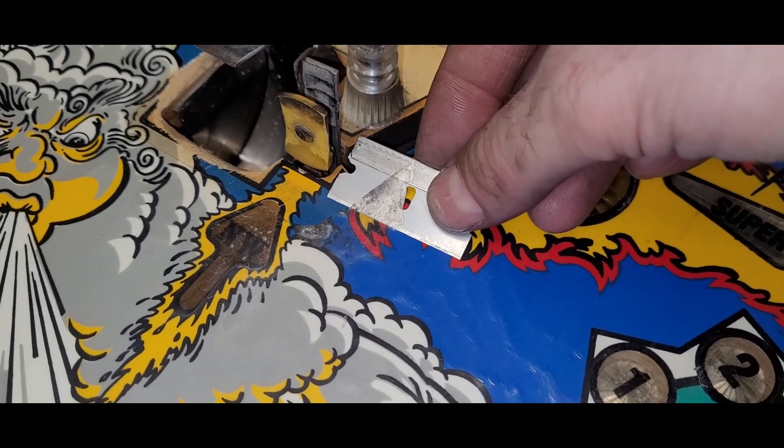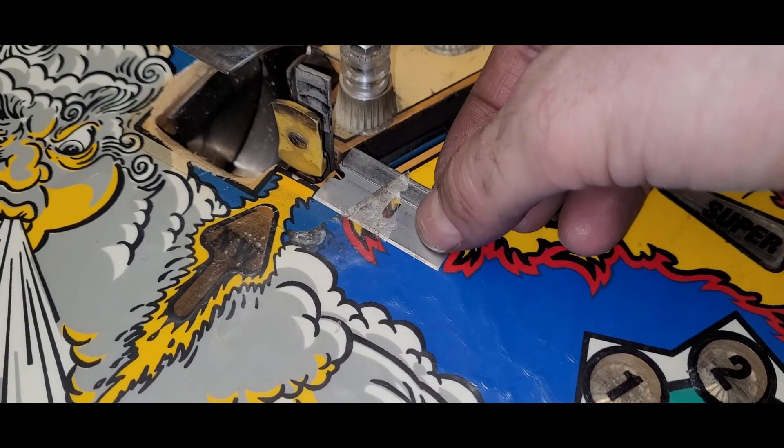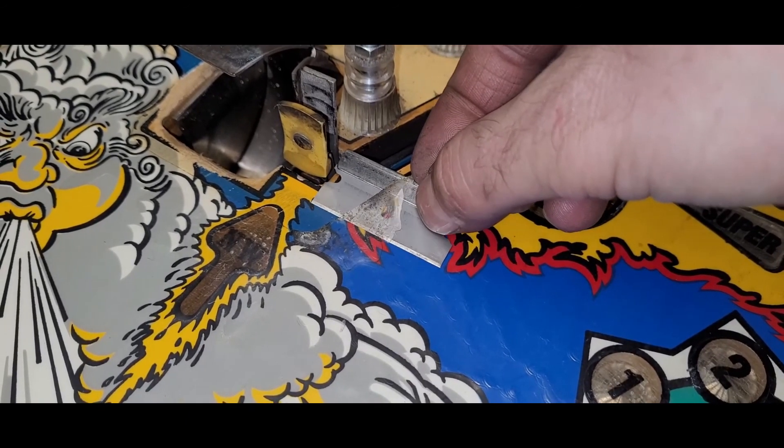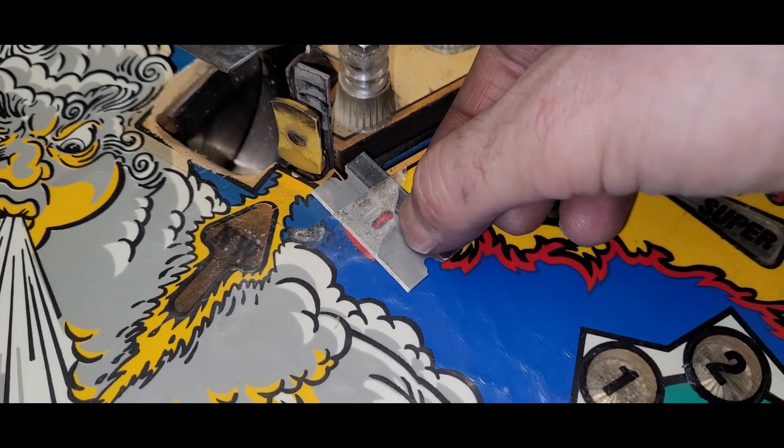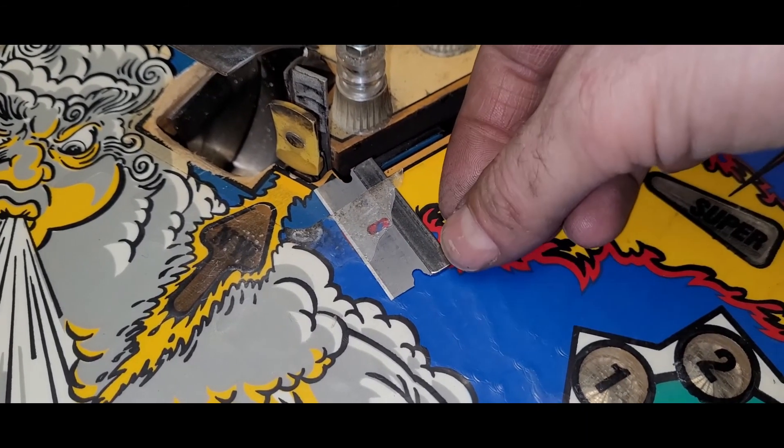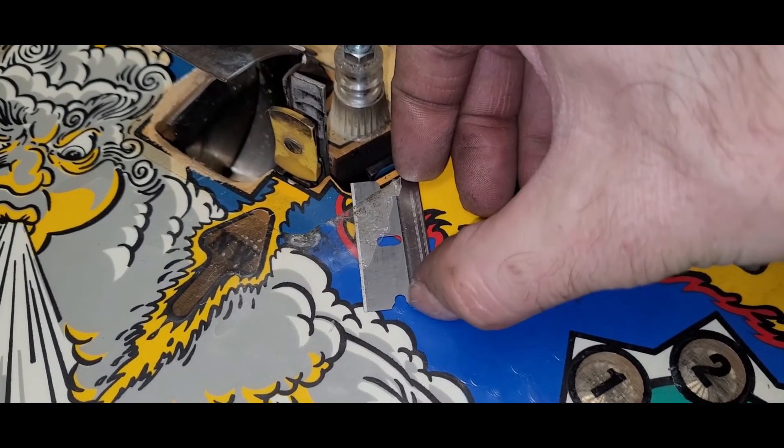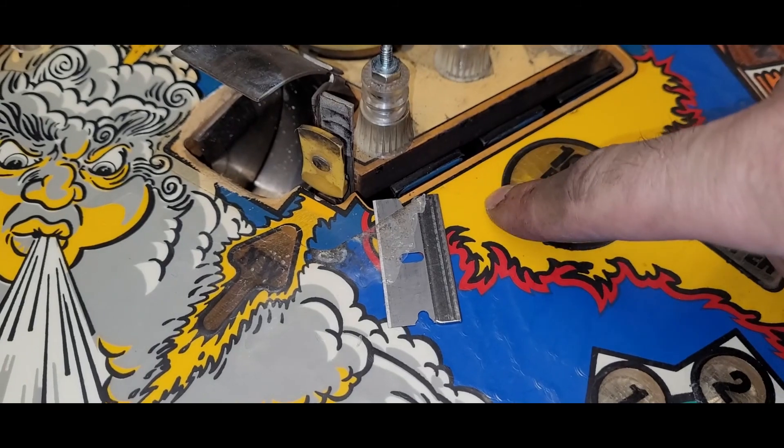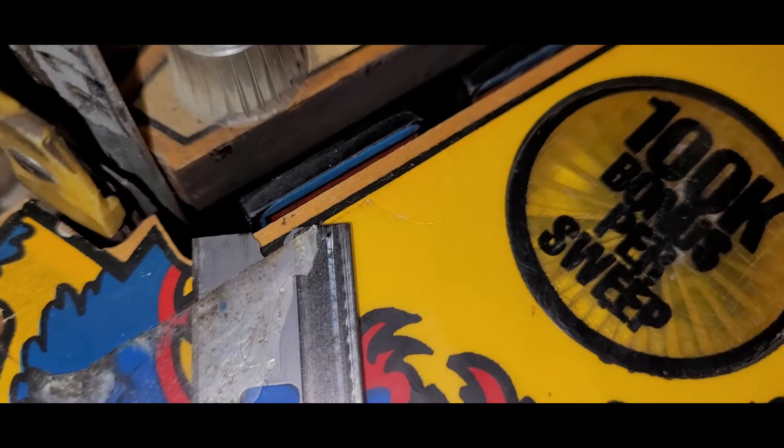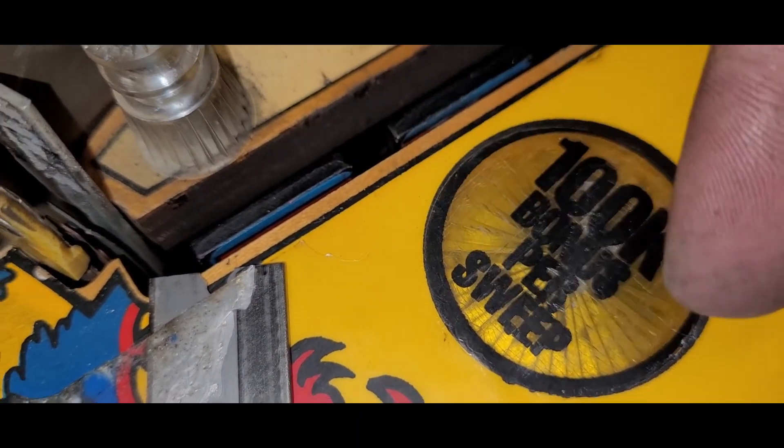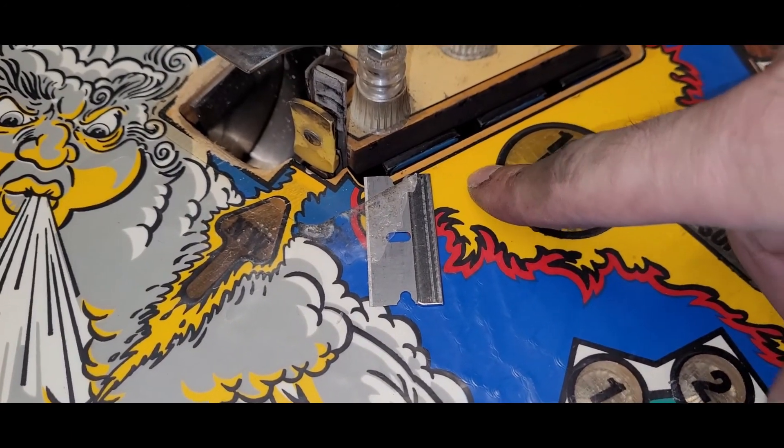Just kind of working around the loose mylar with a brand new razor blade. Being careful not to cut into the playfield. And I did that right here. See that? Exactly. You can't. There's a little U-shape out of there of mylar I trimmed out. Cleaned the edges and boom. Much better.